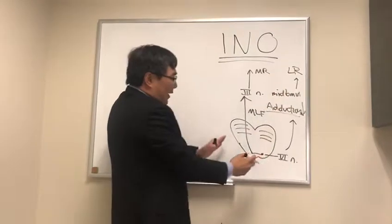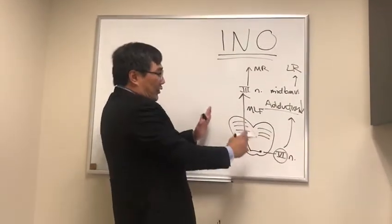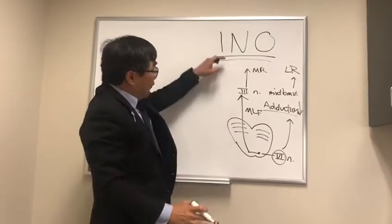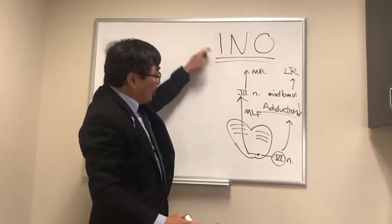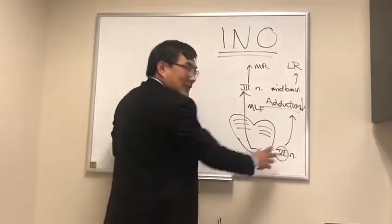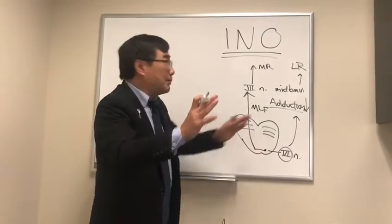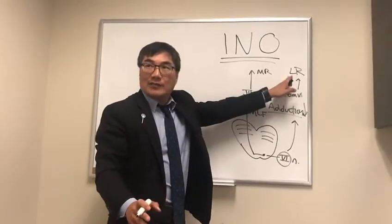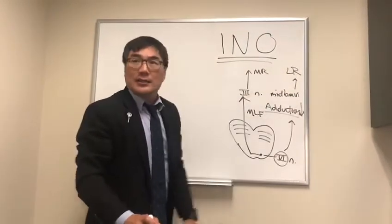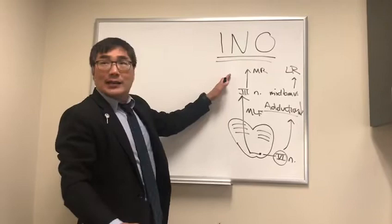When you have a sixth nerve nuclear lesion, you can get a horizontal gaze palsy. If you have an INO, you get an adduction deficit. And because the lateral rectus is still firing, you get a horizontal dissociated abducting nystagmus from the firing of the lateral rectus on a gaze towards the side of the lesion and away from the INO.